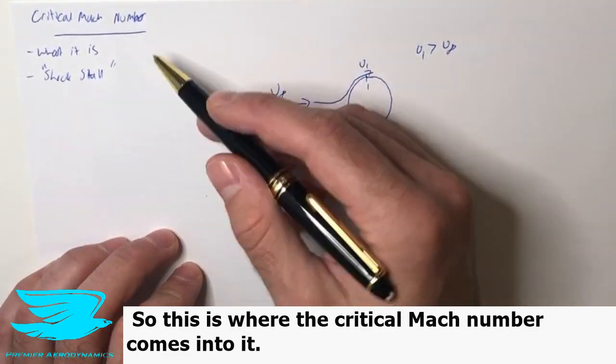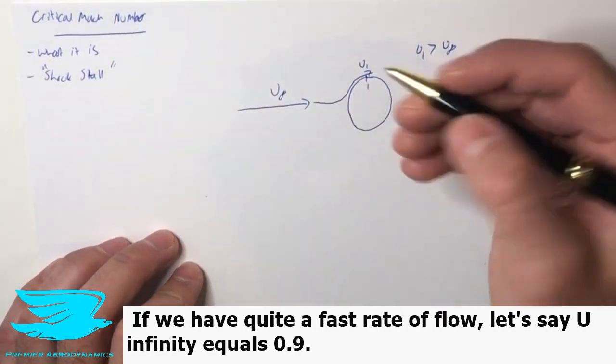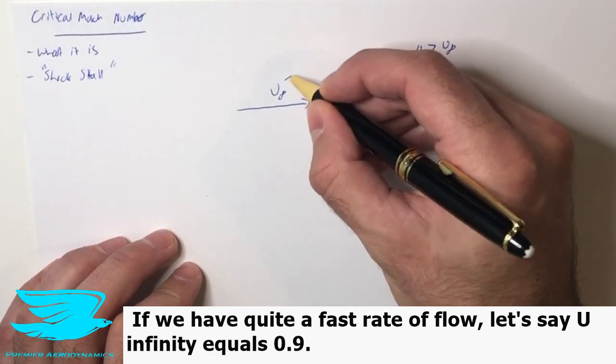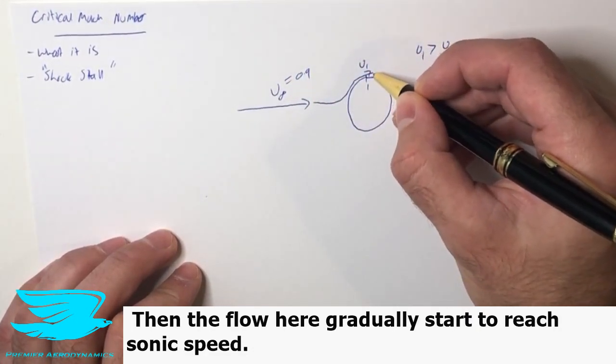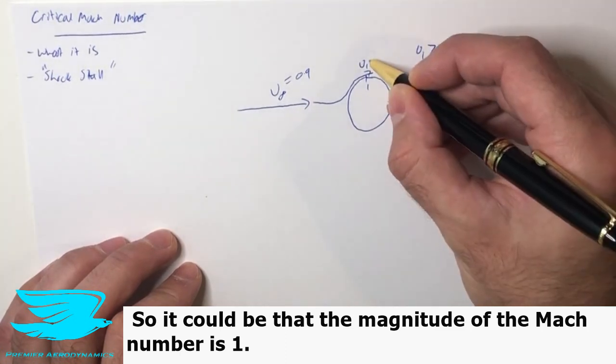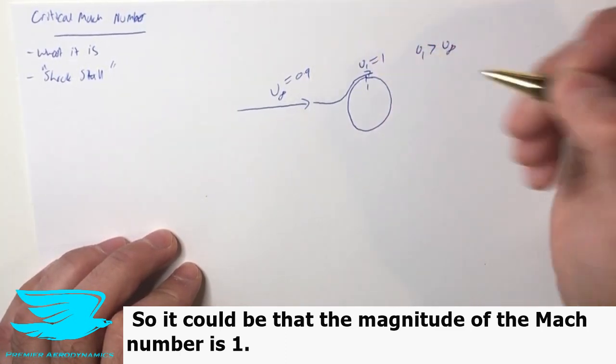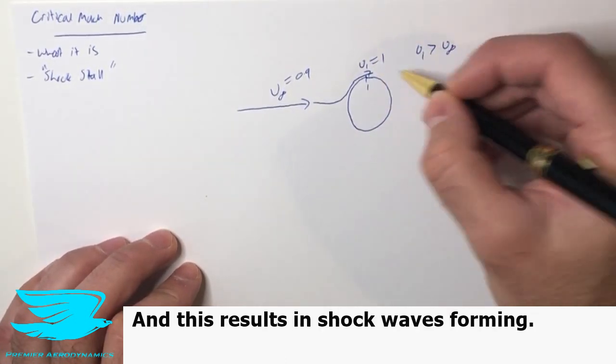This is where the critical Mach number comes into it. If we have quite a high fast moving flow, let's say u infinity equals 0.9, then the flow here could actually start to reach sonic speeds. So the magnitude of the Mach number could be 1. And this results in shock waves forming.